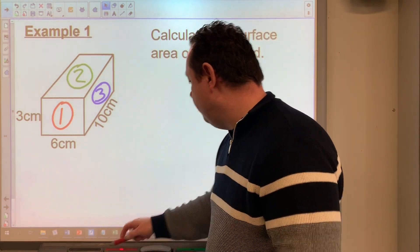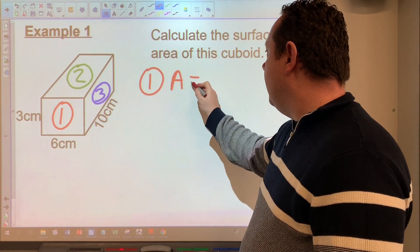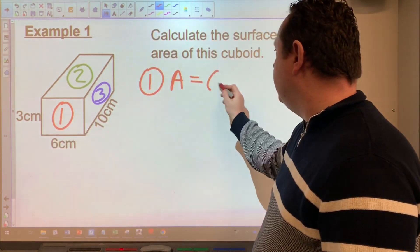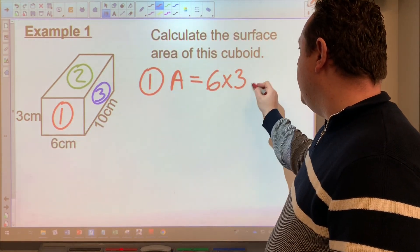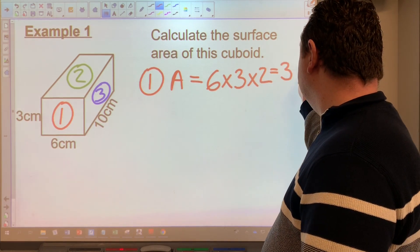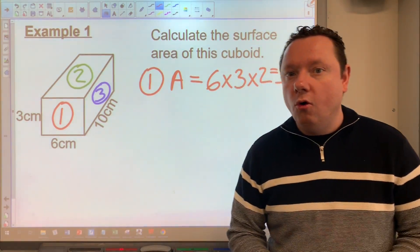We'll do number one first. So I'll write number one, area, and I need to identify six times three. So I like six times three and I need to remember to double it. So times two, that's 36. I'll leave the units till the end because the units are all the same.